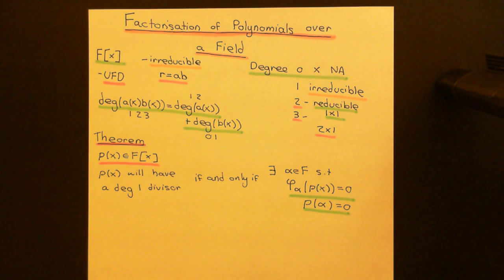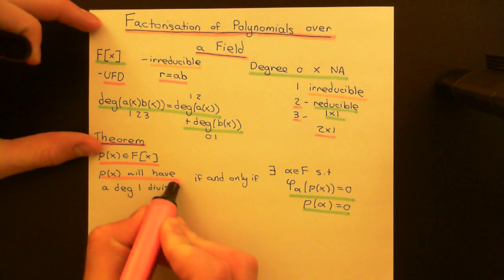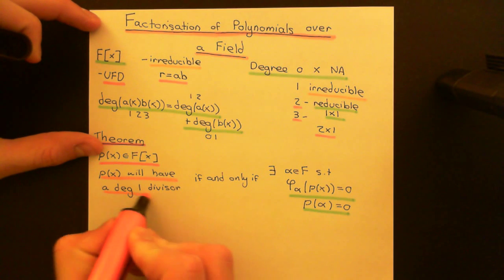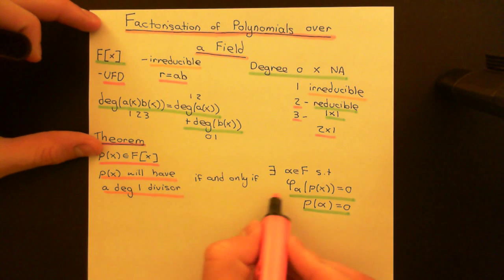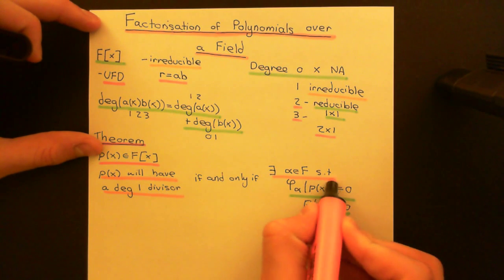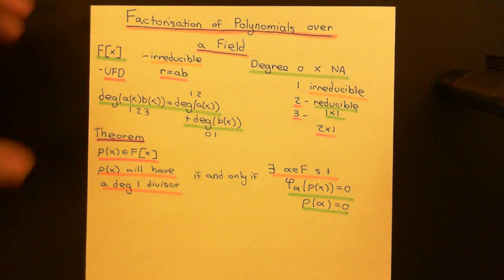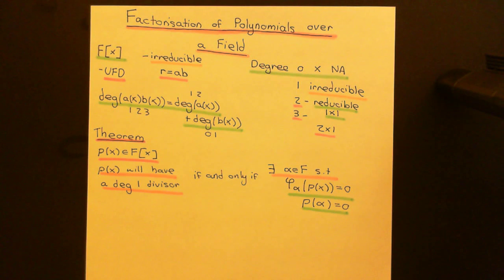This is the important theorem that we want to prove: P of X will have a degree 1 divisor if and only if we can find some alpha such that if we evaluate the polynomial at that alpha, we will get 0.